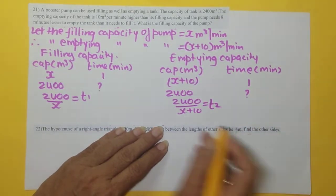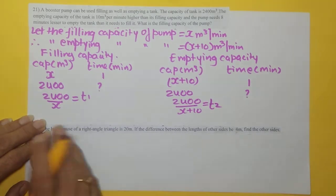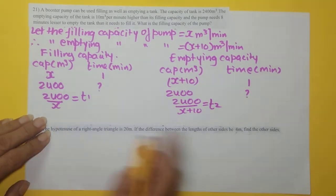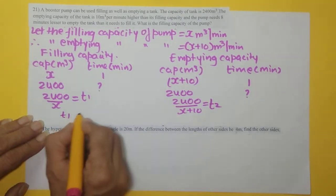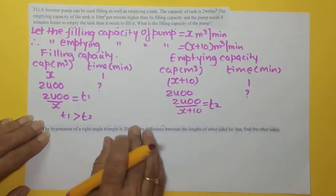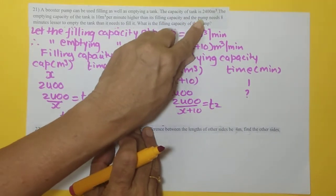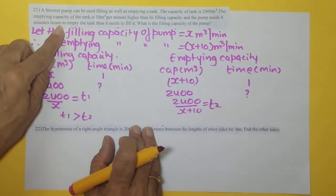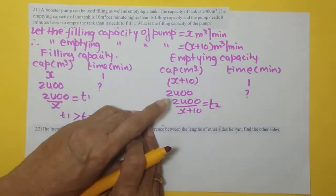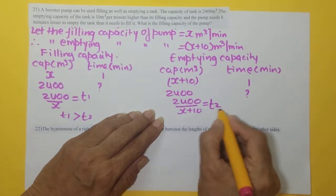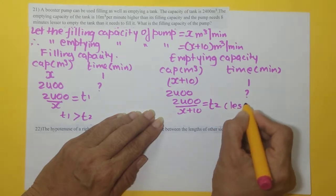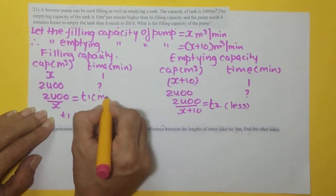Now, we know that T1 is greater than T2. Why? Because the pump needs 8 minutes less to empty the tank. So this is less, so this will be more automatically.